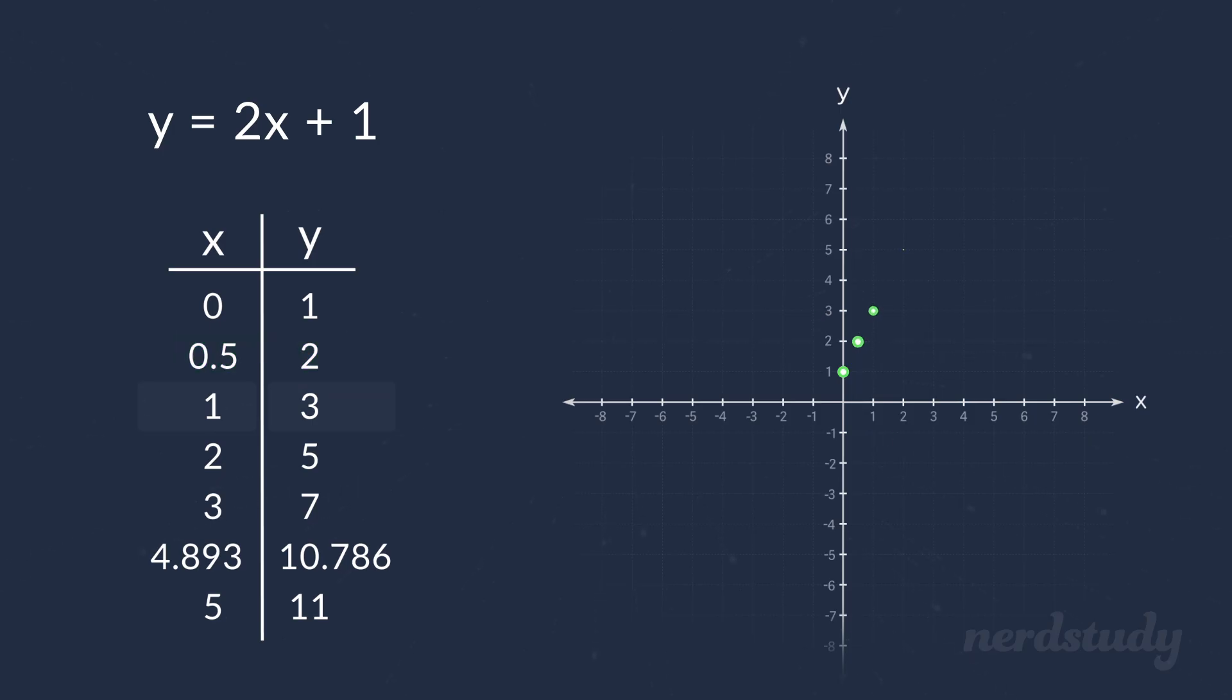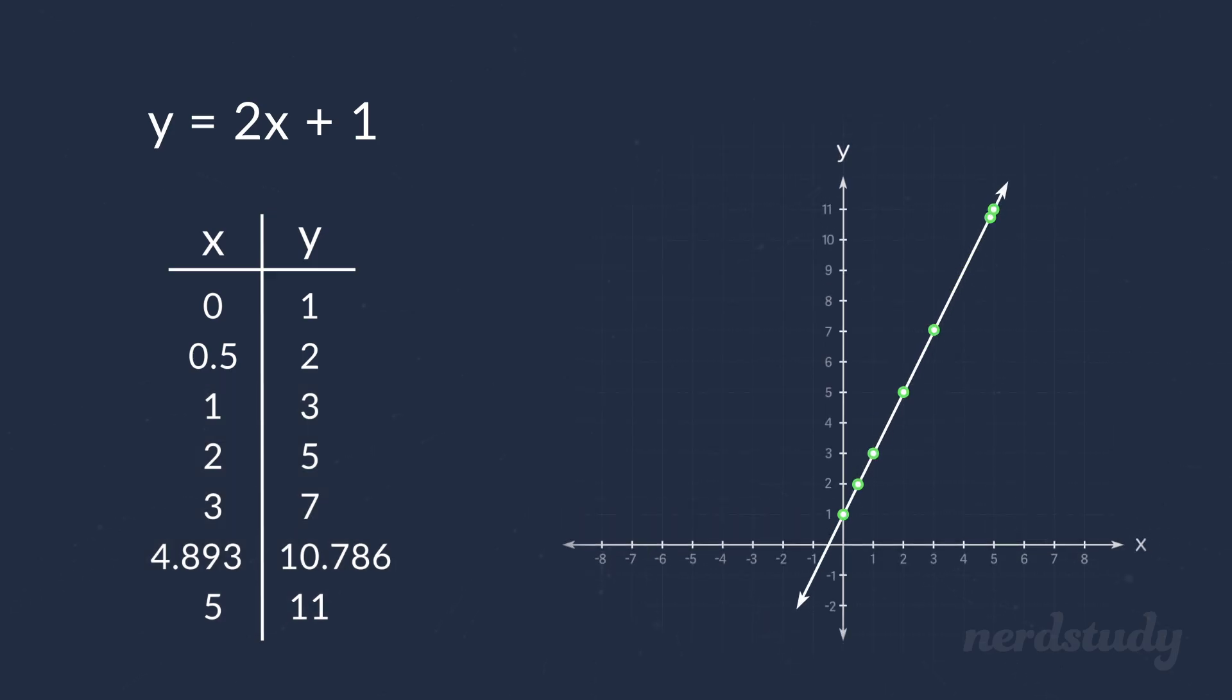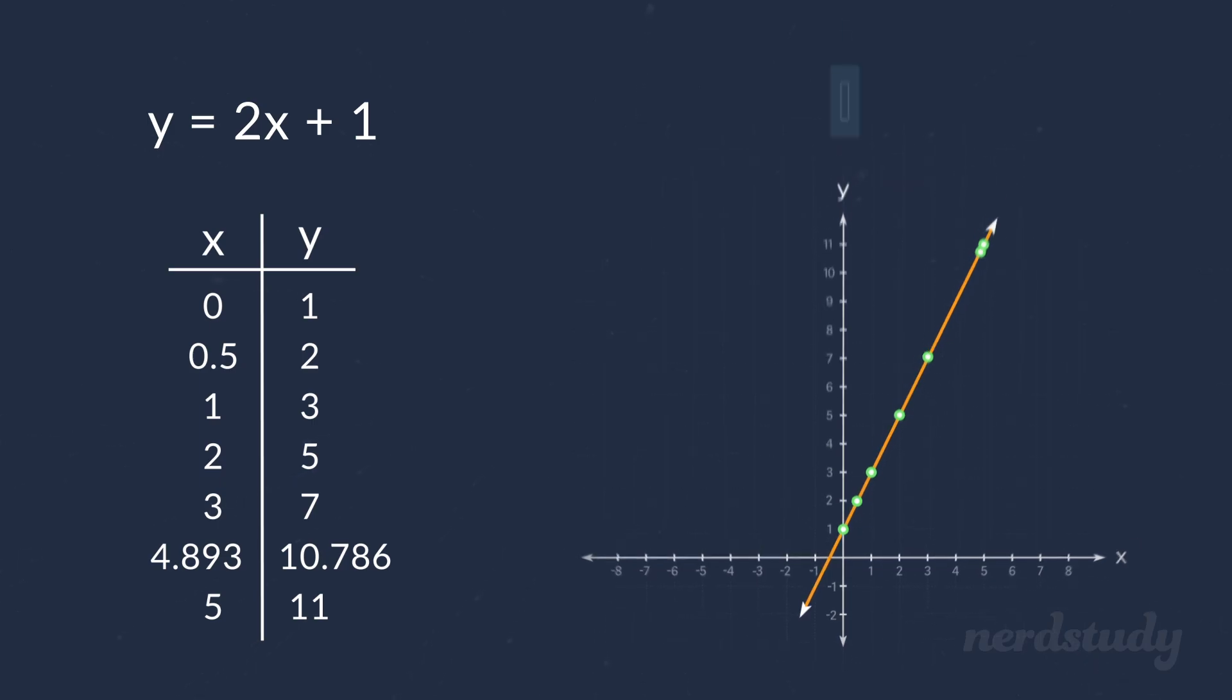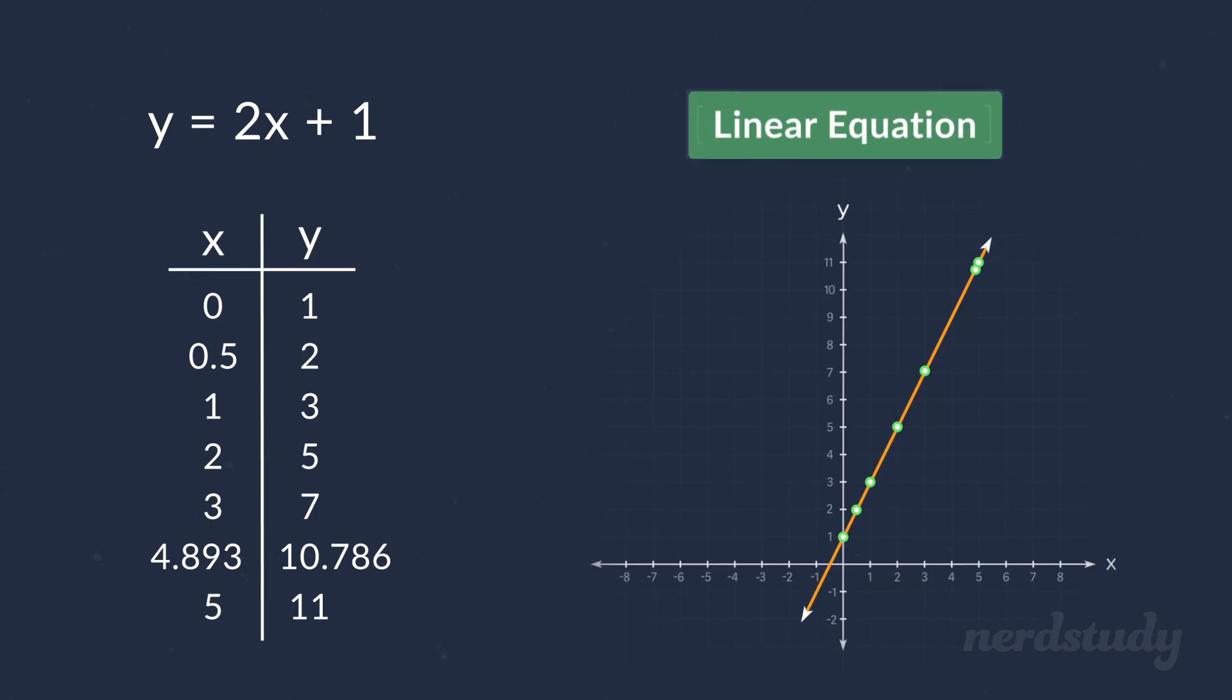And if we did this for all the x values on the table, we'd get this straight line on the Cartesian plane, like so, which is why we call this equation a linear equation.